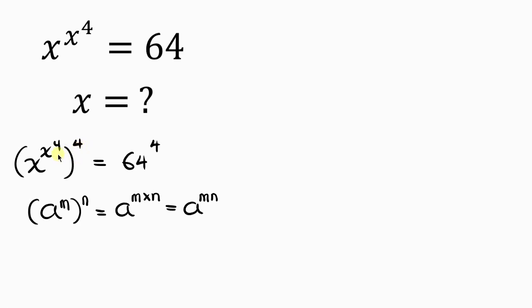So our next step will be for us to switch the positions. So we have x. Now 4 will come inside and x to the 4th will go outside. So this is equal to, now 64 is same as 8 squared, and this is raised to a power of 4.